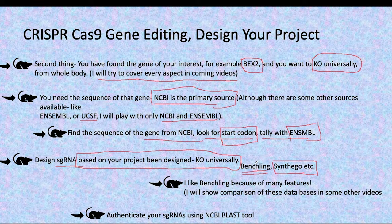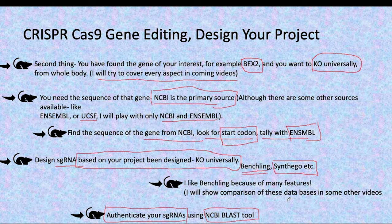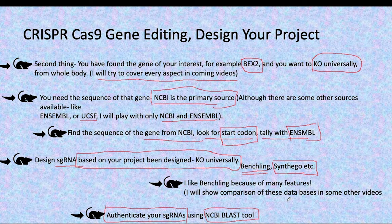After you have designed your sgRNA from Benchling, you need to authenticate your sgRNA using the NCBI BLAST tool. You need to do this because you want to avoid off-target effects, so authentication of your sgRNA is very important. In the next video, Part 2, I will show you how to find the sequence of your gene of interest using NCBI, tally that sequence with Ensembl, and then design the sgRNA using Benchling. Keep watching, thank you.